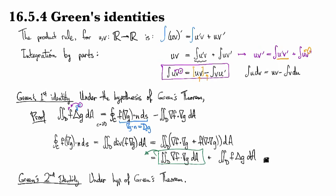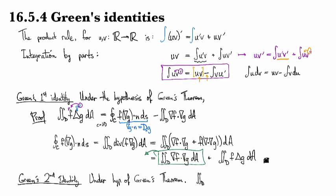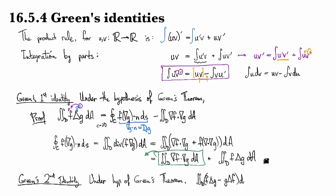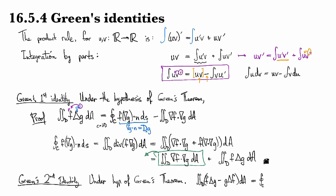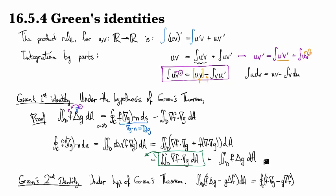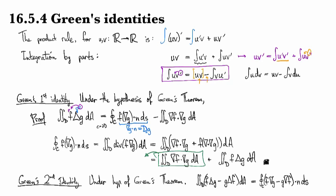And this one states that the double integral over a region of f Laplacian g minus g Laplacian f is equal to the integral around the boundary of f gradient g minus g gradient f. And that's where we integrate the normal component, the normal derivative.